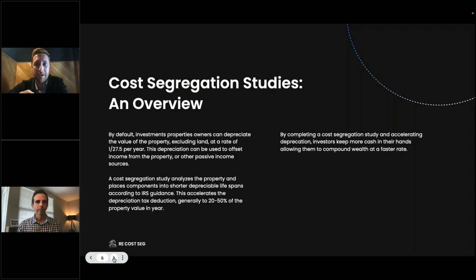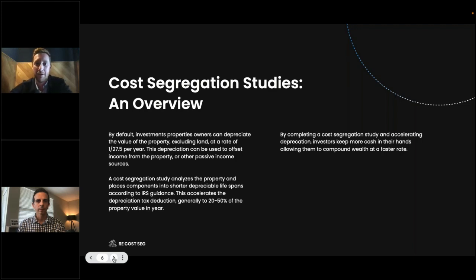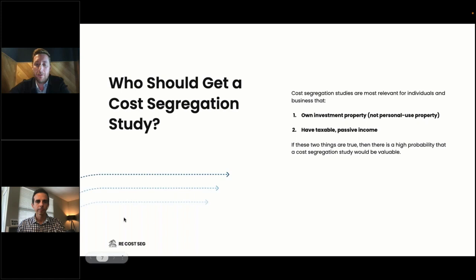A cost segregation study breaks down all the components of your property and puts them into shorter depreciable lives, so you capture more depreciation faster. In the single family home segment, in the first year with a cost seg study, folks are often able to depreciate 20 to 50 percent of the property's value in year one. The net effect is you hold onto cash flow longer, forgo making tax payments on passive income longer, and have more cash available to reinvest in new properties rather than handing it over to the IRS.